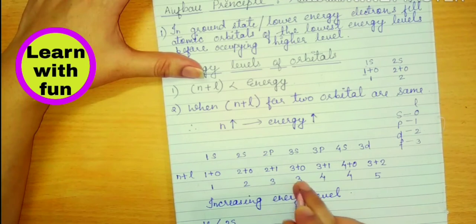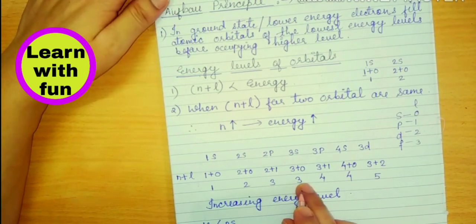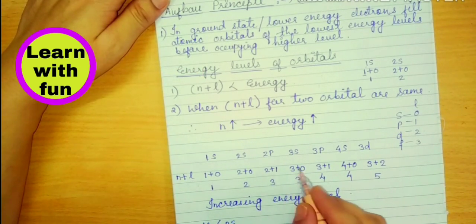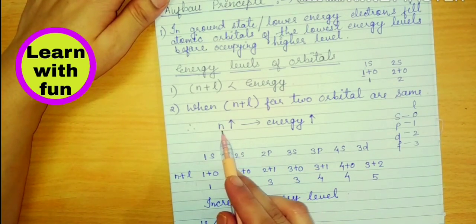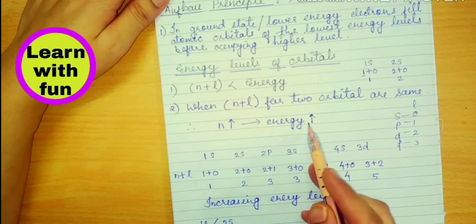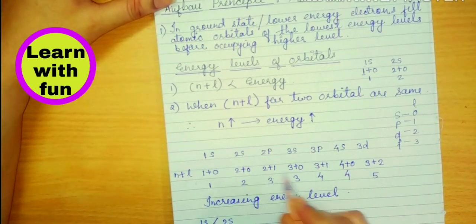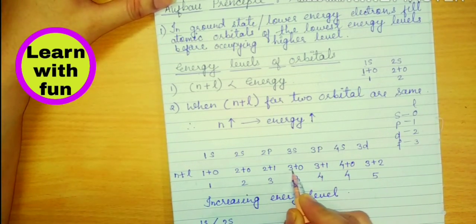After 2 comes 3. Now 3, you can see 3 appearing two times. So how will you find which orbital has more energy? To find that out, I just told you that whichever has larger N has more energy. So between these two orbitals, whose N is larger? 3S.